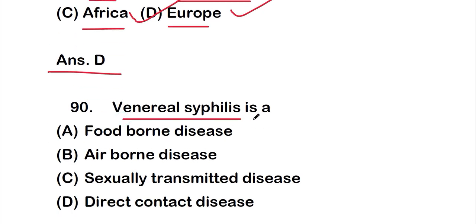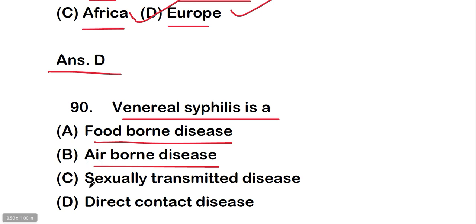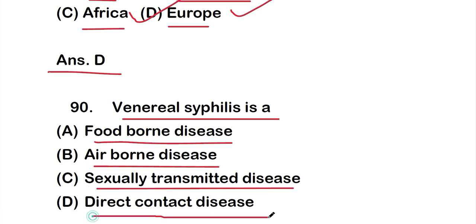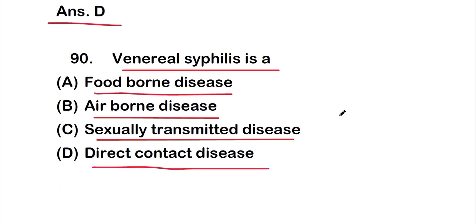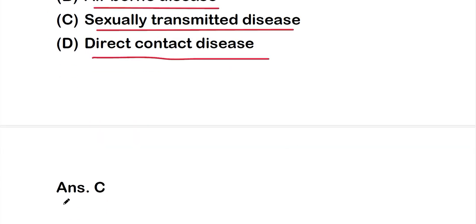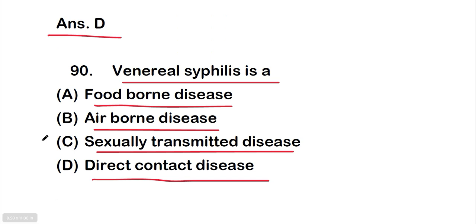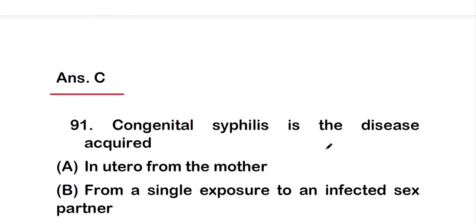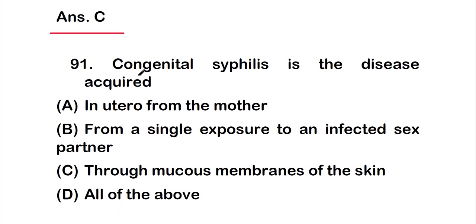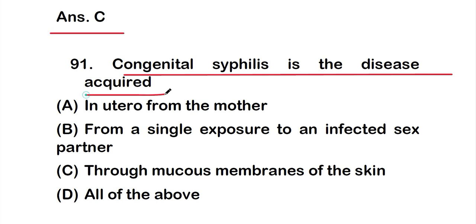Question number 90: Venereal syphilis is — option A: a foodborne disease, option B: an airborne disease, option C: a sexually transmitted disease, option D: a direct contact disease. The correct answer is option C — venereal syphilis is a sexually transmitted disease.